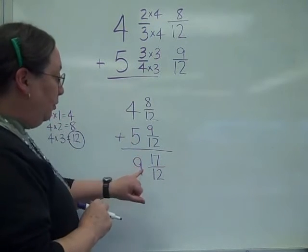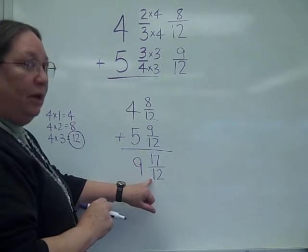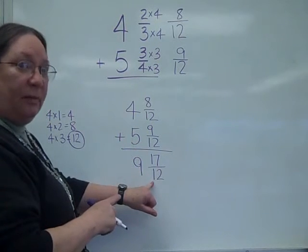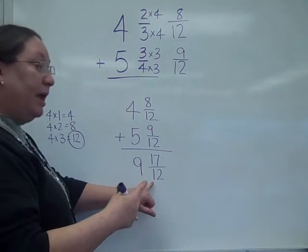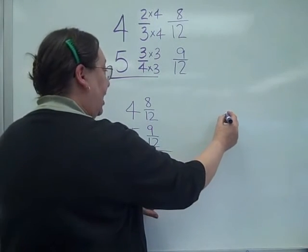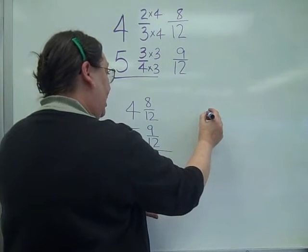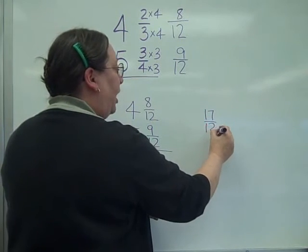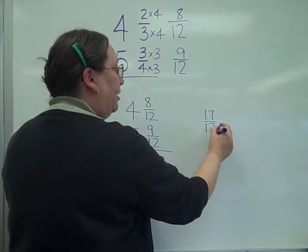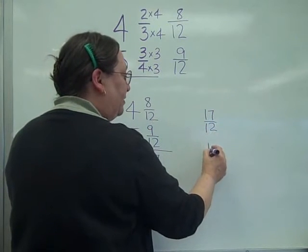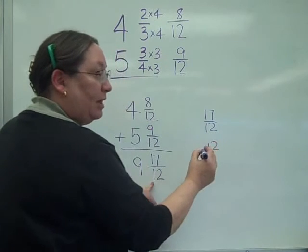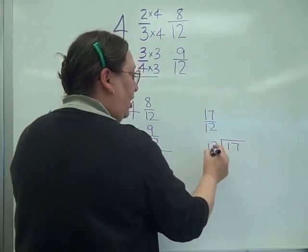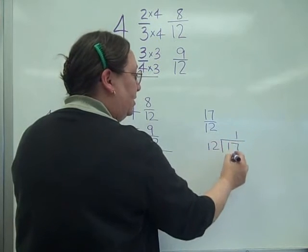And you know the rule, you may not leave a fraction where the numerator or the top is larger than the denominator or the bottom. So we have to do one more step. I'm going to come off to the side, and I've got the 17 twelfths, which I'm going to take the 17 divided by 12. Gives me 12 on the outside of the division, the 17 on the inside of it, 12 goes into 17 once,